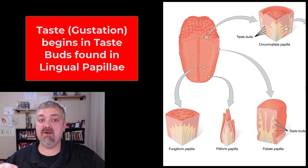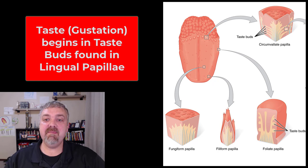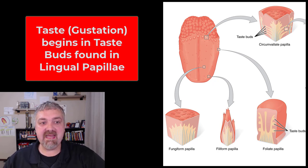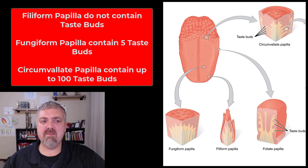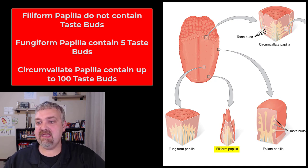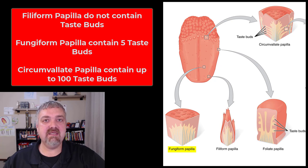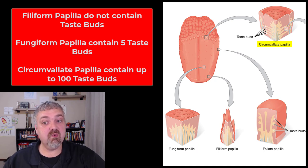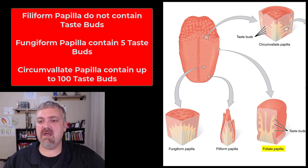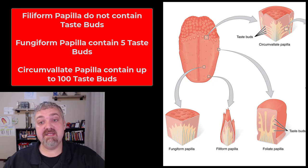Taste begins in what are called taste buds. Taste buds are where the taste receptors or gustatory receptors are, and they're located in epithelial projections called lingual papillae. There are really four types. Only three of them are really important. The filiform papillae are just there to provide friction — they don't have any taste buds. The fungiform papillae usually have about five taste buds each. The circumvallate papillae can have as many as a hundred taste buds. And lastly, the foliate papillae are generally found on the side and back of the tongue.